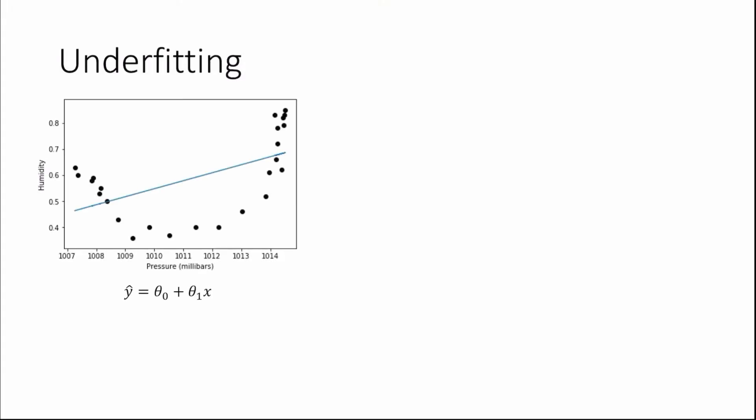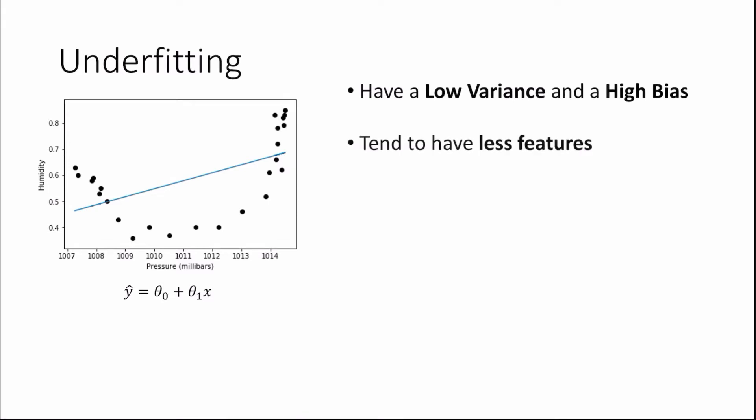Take a look at the following model. This model is said to underfit our data. Models which underfit our data have a low variance and a high bias — I'll explain this in a minute — and they tend to have less features. In this case we only have one feature which is x.